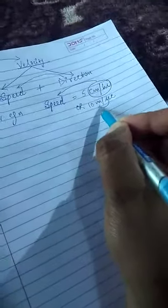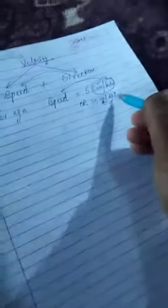Speed can be in meters per second as well, but with seconds, meters will come always, and with hours, kilometers will come always. This is the SI unit of speed, so remember.